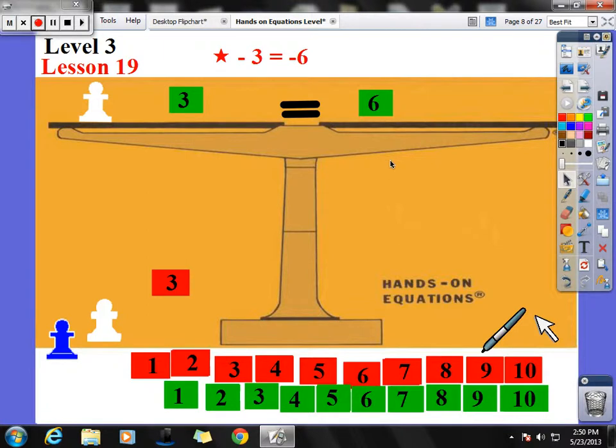And to solve my equation, I can subtract negative 3 from both sides. So I can take negative 3 from negative 3, and I have a 0 here. And I take negative 3 from negative 6, and that leaves me with a negative 3. So that leaves me with an answer of star equals negative 3.